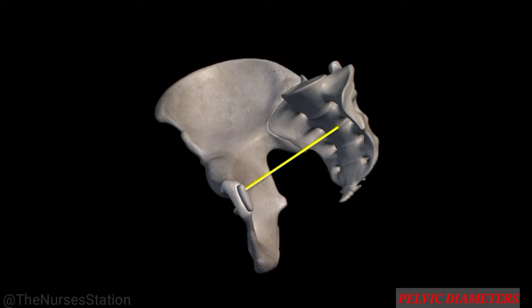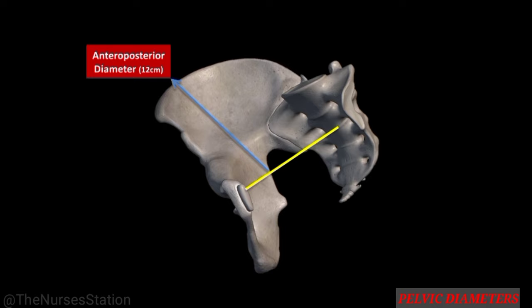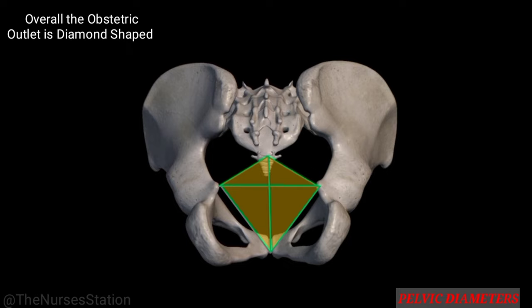The anterior-posterior diameter of the cavity measures from the midpoint on the posterior surface of the symphysis pubis to the junction of the second and third sacral vertebrae, measuring about 12 centimeters. The other diameters cannot be precisely measured as the points lie over soft tissues; the overall diameter of the cavity is taken to be 12 centimeters.